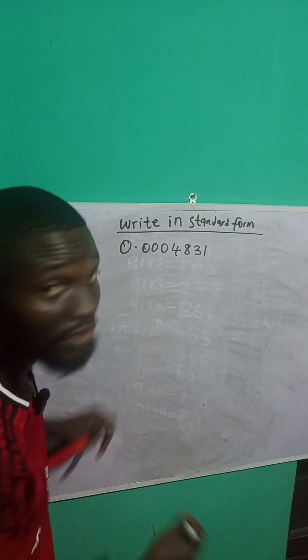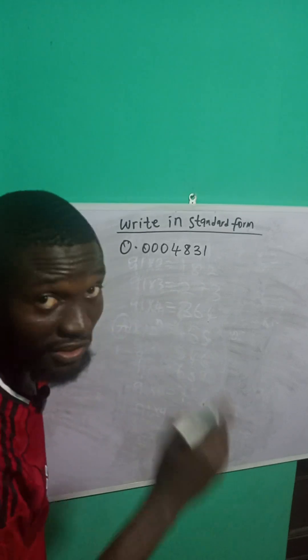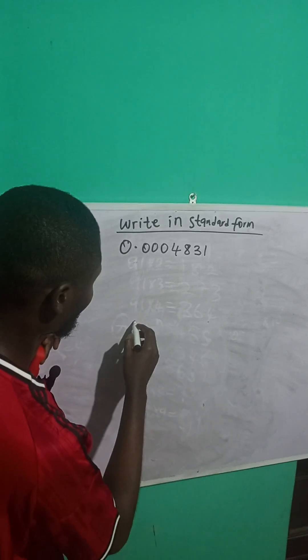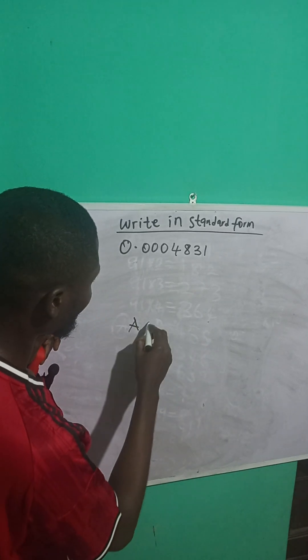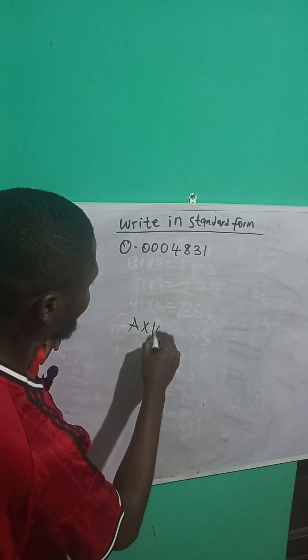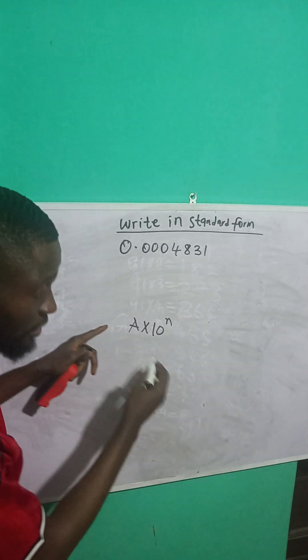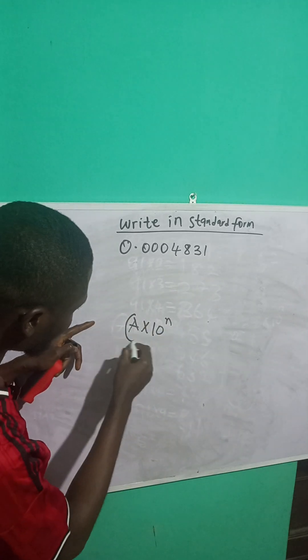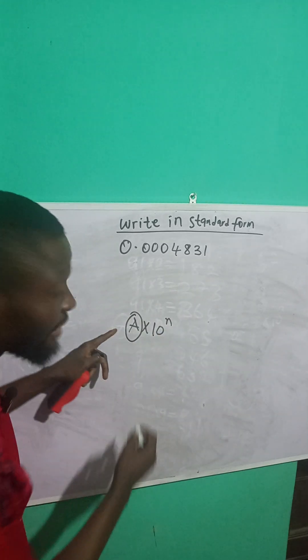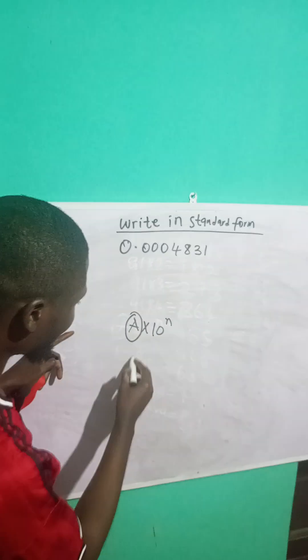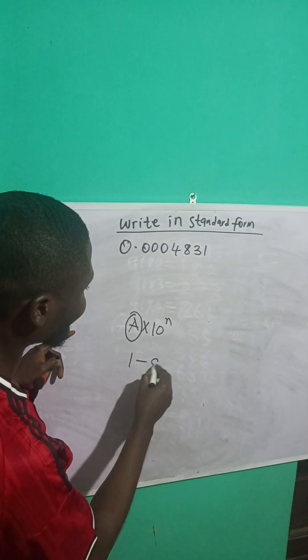Write this number in standard form. The formula for standard form is a times 10 raised to power n. This 'a' represents numbers from 1 to 9.